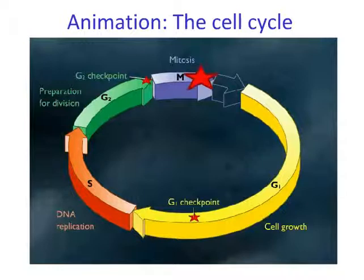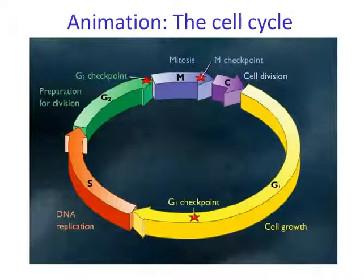Mitosis is assessed at a checkpoint during M phase. Once this checkpoint is passed, the cell completes mitosis and begins the cytokinesis C phase, which actually overlaps with the later parts of mitosis and is not a distinctly separate phase. During C phase, the cytoplasm is divided and two daughter cells are created. When this process is finished, the daughter cells enter G1 phase and the cycle is complete.